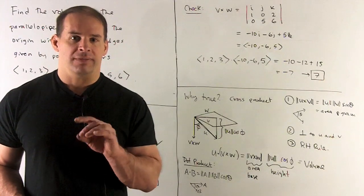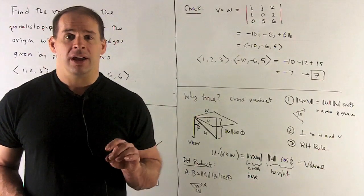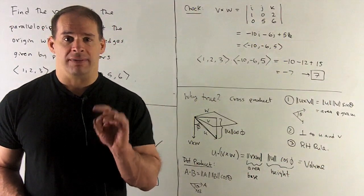the length of that vector is going to be length of V times the length of W times sine of the angle between them. If you draw your picture,